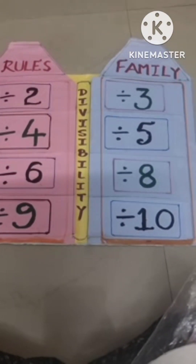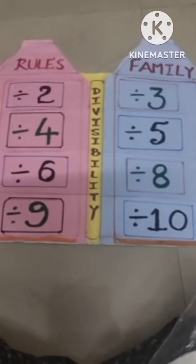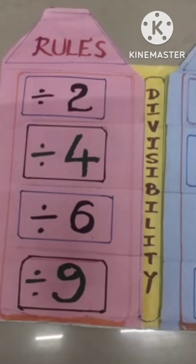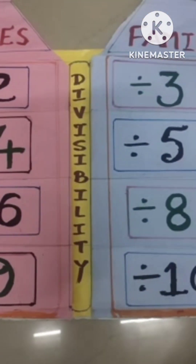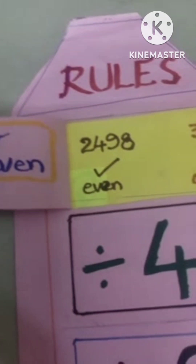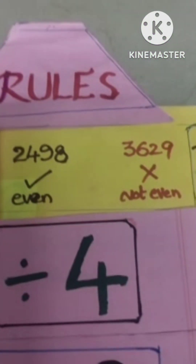Today we learn the divisibility rules for two, three, four, five, six, eight, nine, and ten. Every family has some rules — there are so many divisibility rules. Let us check for two: the given number should be an even number to be divisible by two. Check there.